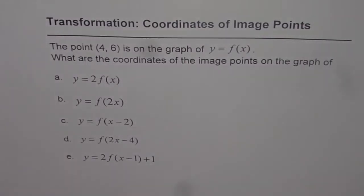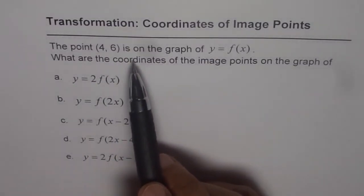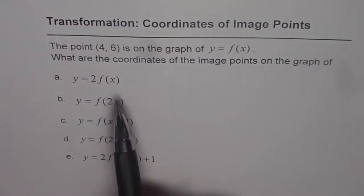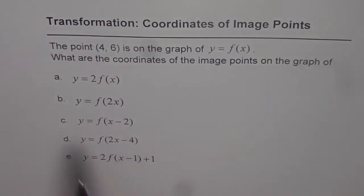Here is a question to understand coordinates of image points on a transformed function. The point (4, 6) is on the graph of y = f(x). What are the coordinates of the image points on the graph of the five transformed functions given? You have to figure out on each graph how this point gets transformed.